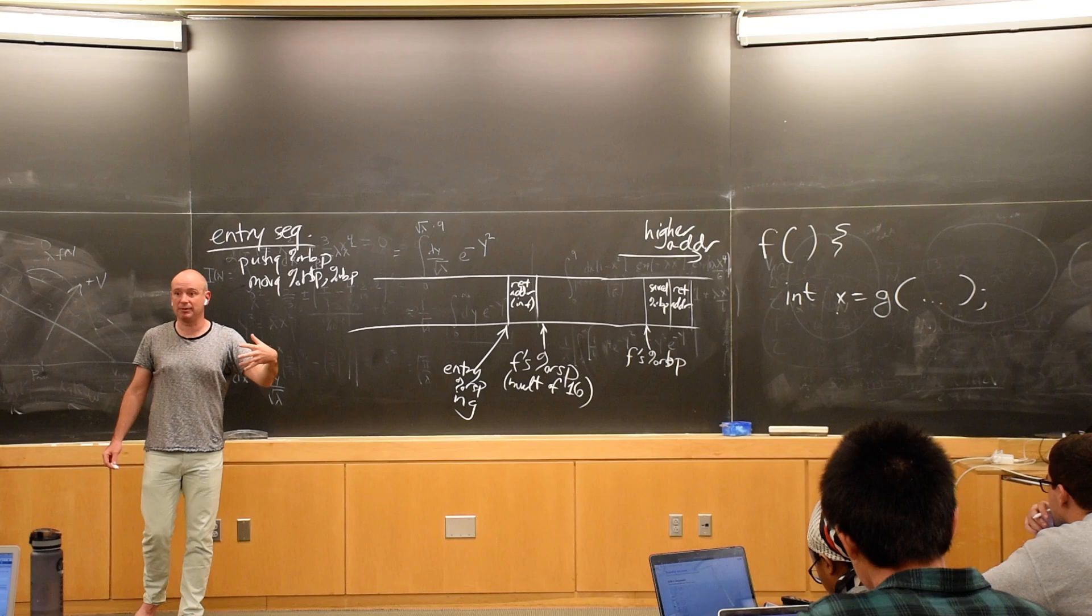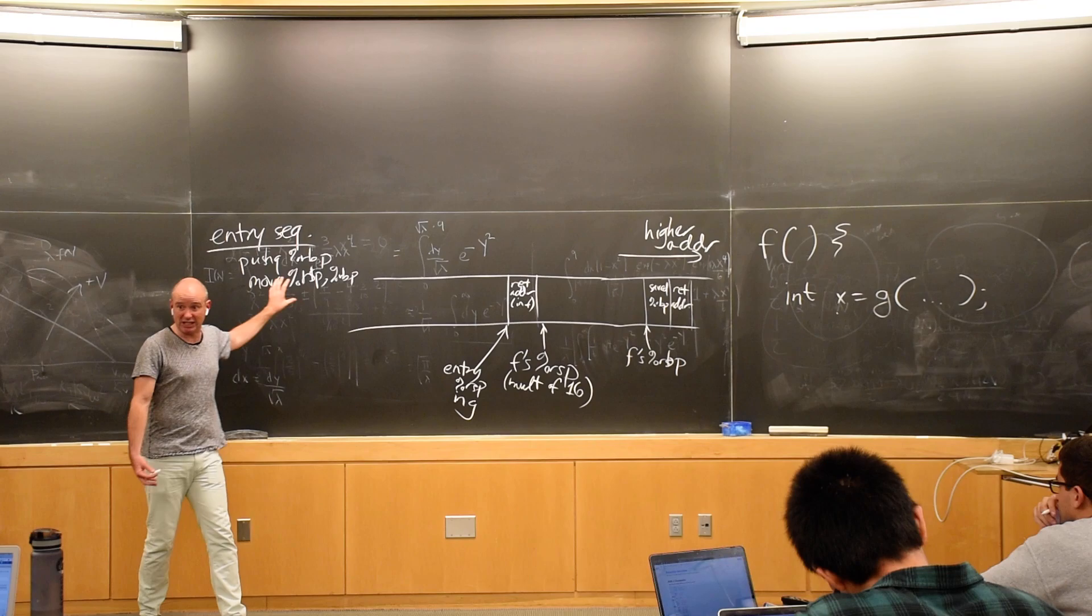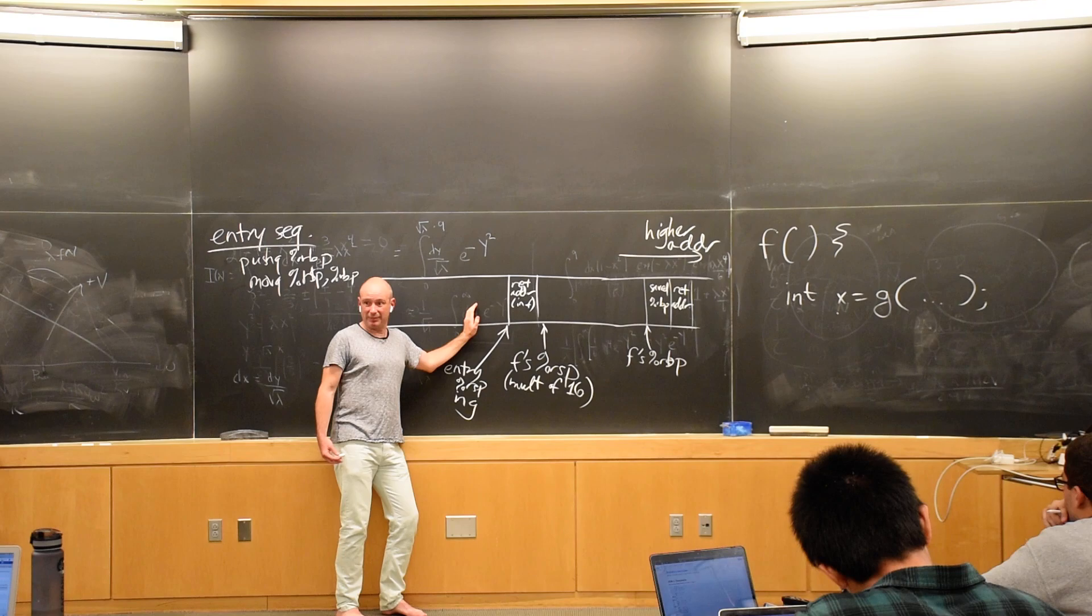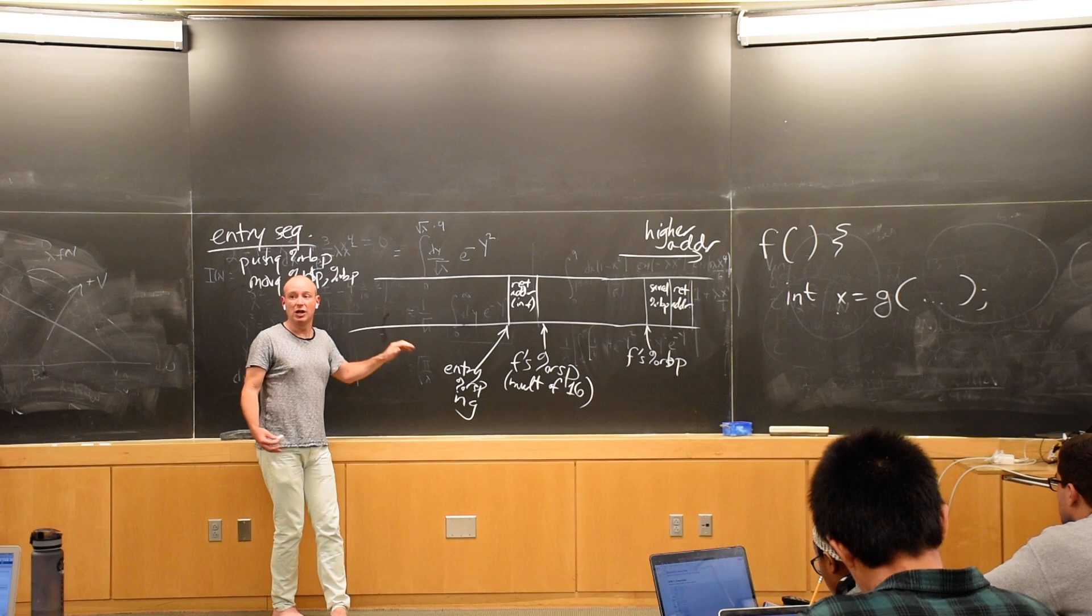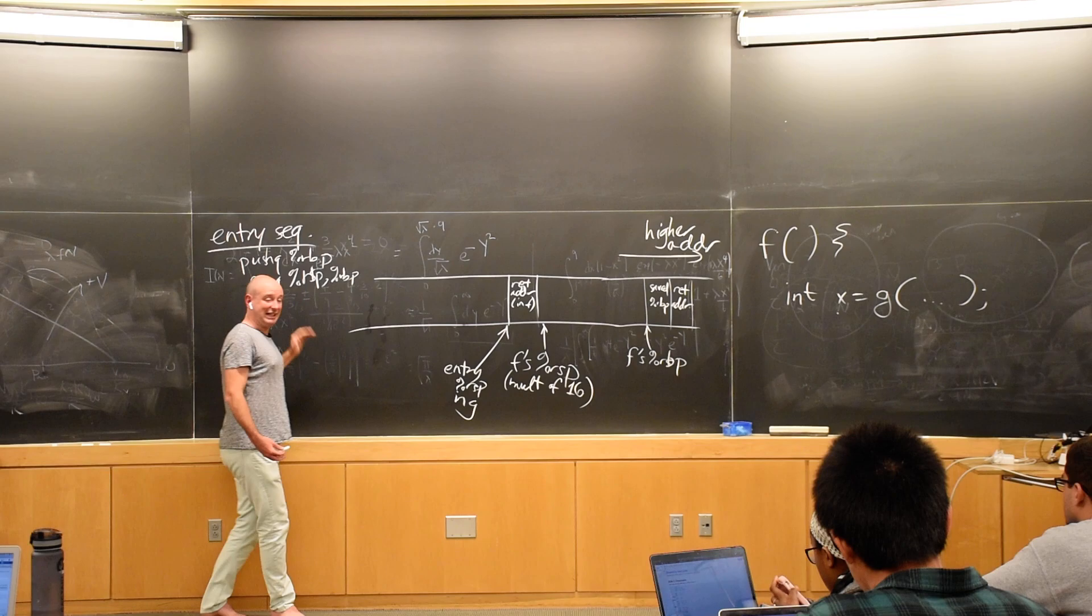If G was a very simple function that was using RBP as a general purpose register, it might not do this. Okay? But if G is a complex function, we'll get another RBP. And then if G has local variables, G will subtract a large number from RSP. It doesn't have to be large, right? But it will subtract some number from RSP, proportional to the amount of space that the compiler has decided to reserve.